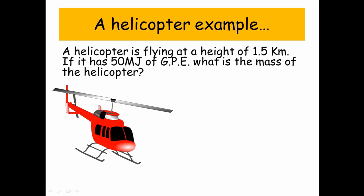A helicopter example. A helicopter is flying at a height of 1.5 kilometers above the ground. If it has 50 mega joules of gravitational potential energy, what is the mass of the helicopter?